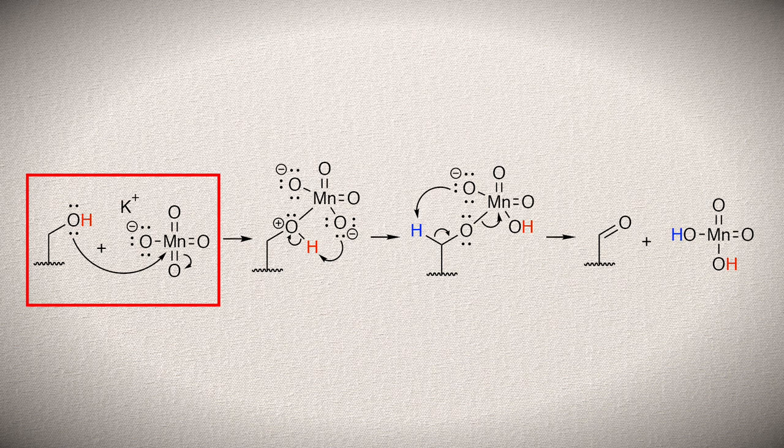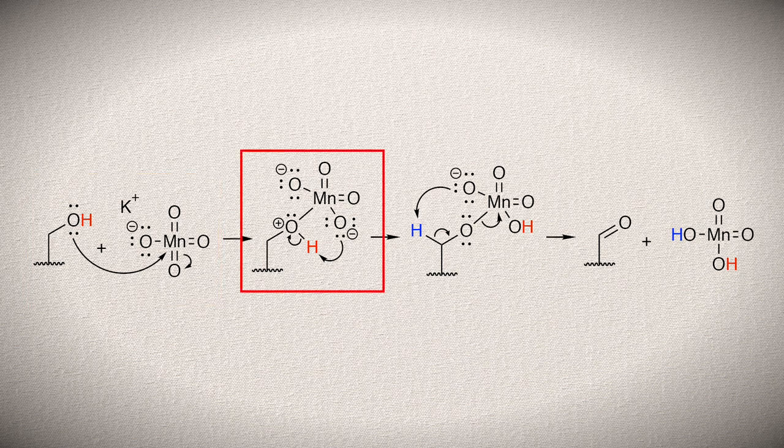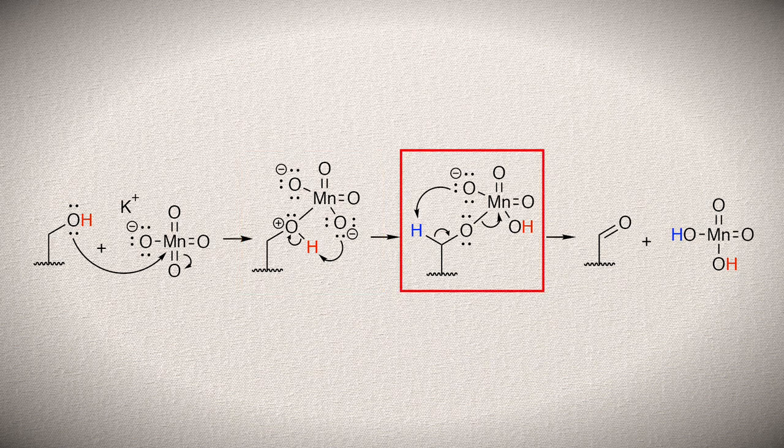First, the lone pair of the alcohol attacks the partially positive manganese in the permanganate ion. This forces one of the double bonds to break and transfer electrons from one of the bonds to one of the oxygens. The resulting intermediate has an oxygen with a positive charge, which is unfavorable. So one of the negatively charged oxygens associated with the manganese performs a proton transfer to remove the positive charge.